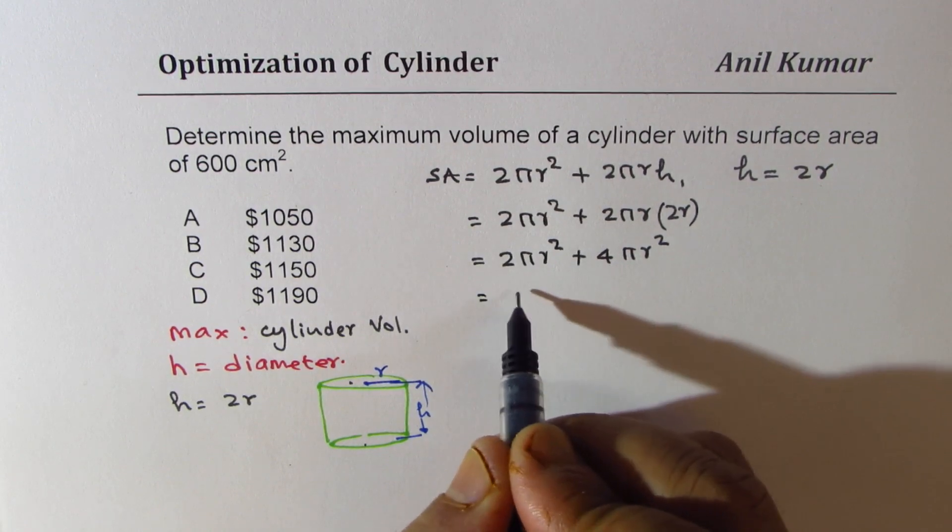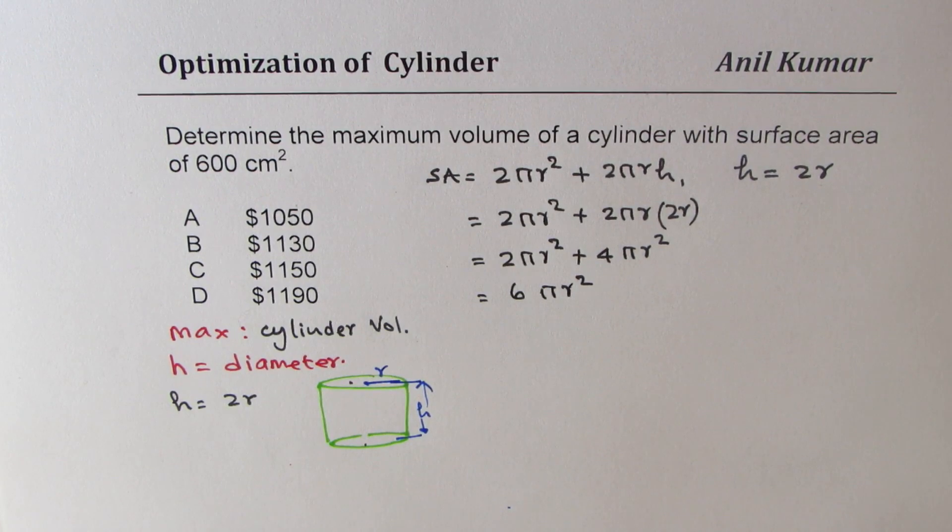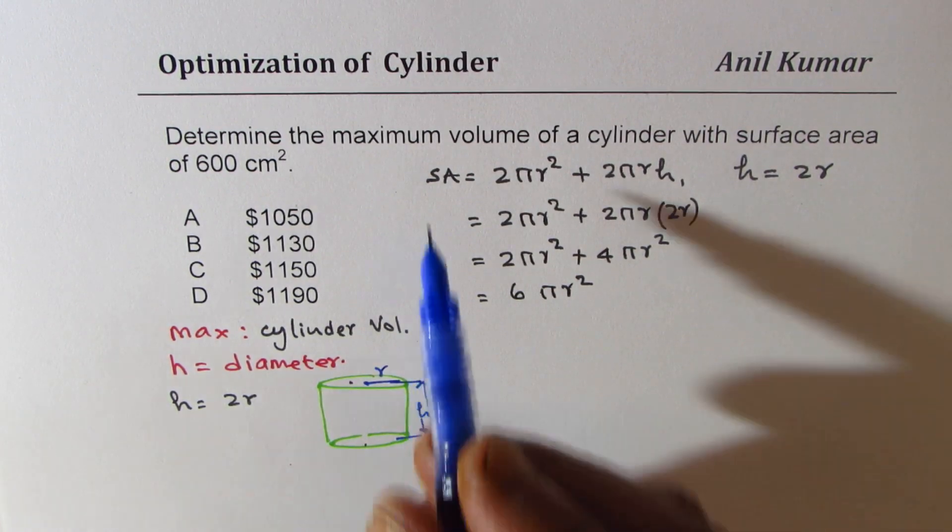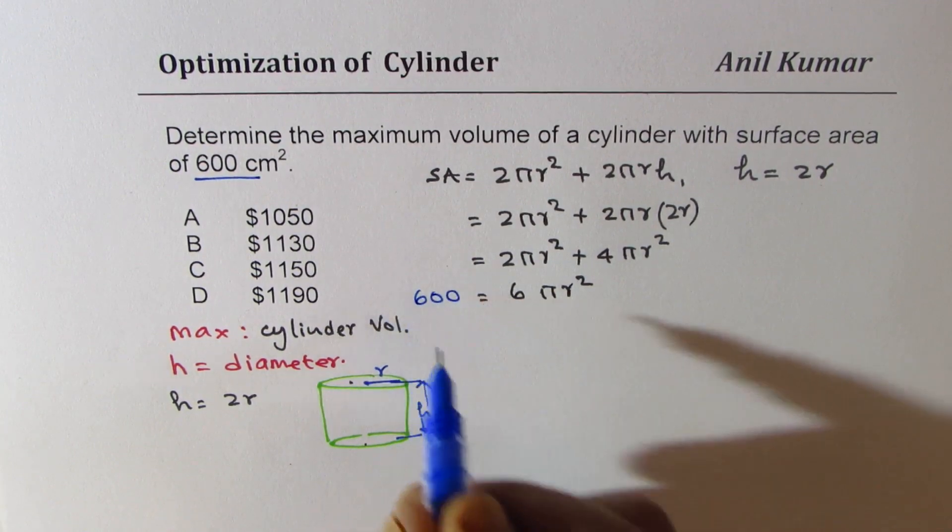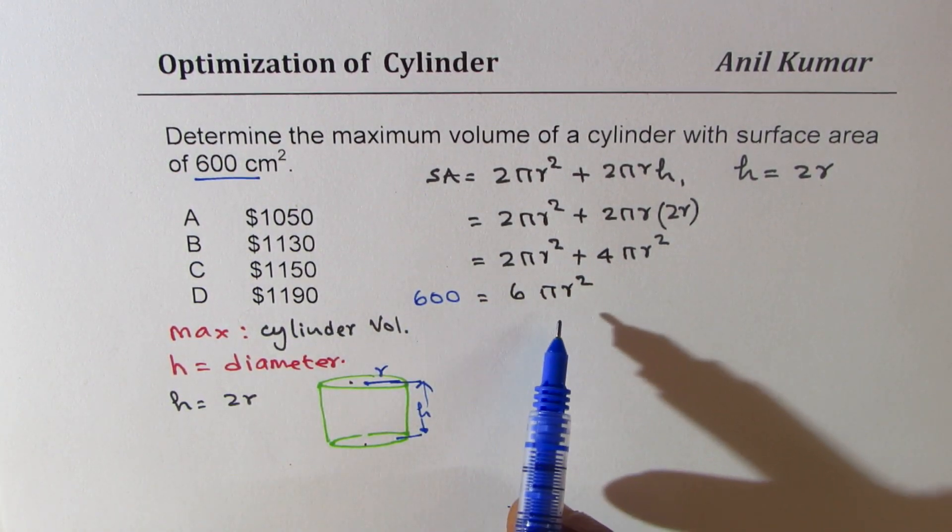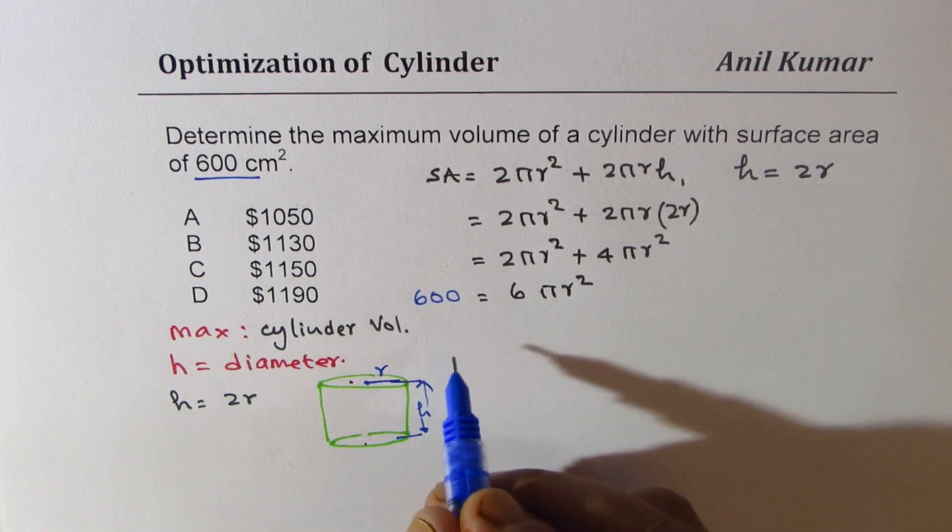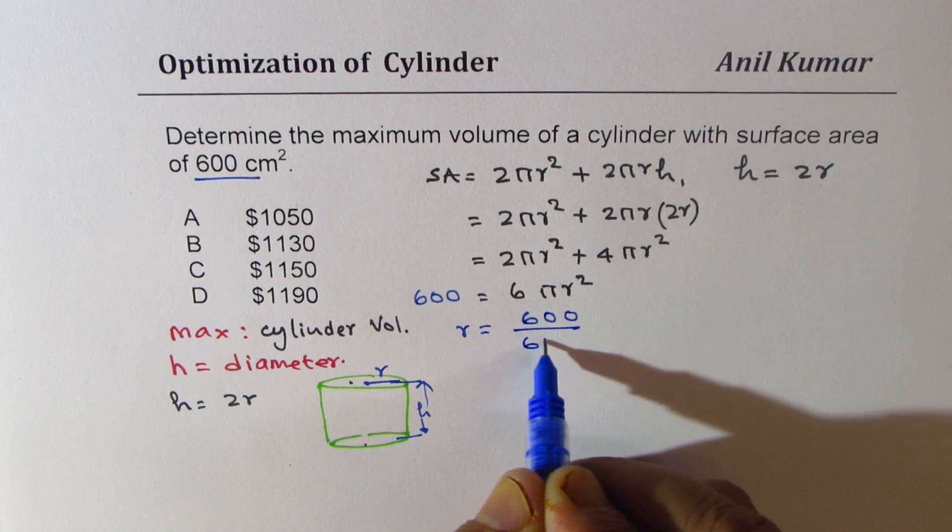That gives us 2 pi r square plus 4 pi r square, which is 6 pi r square. Now surface area is given to us as 600, so we can say 600 equals 6 pi r square.